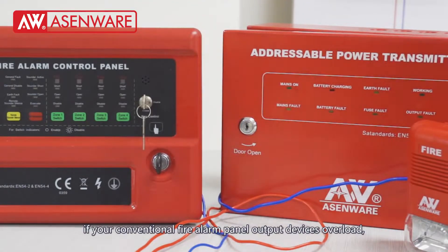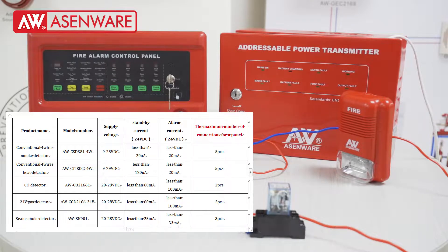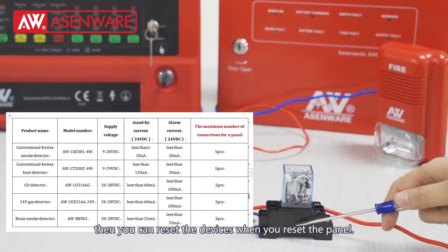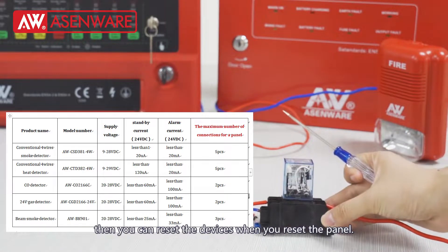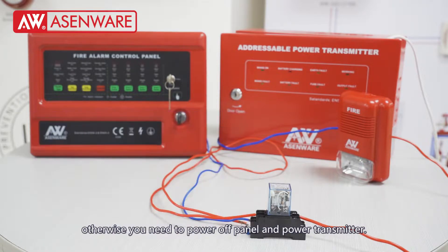If your conventional fire alarm panel output devices are overloaded, then you need to connect with the power supply. If you take this relay, then you can reset the devices when you reset the panel. Otherwise, you need to power off and power on the transmitter.